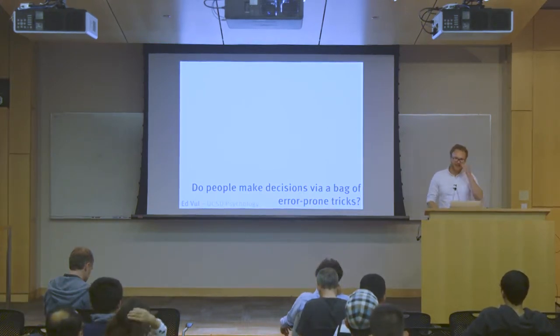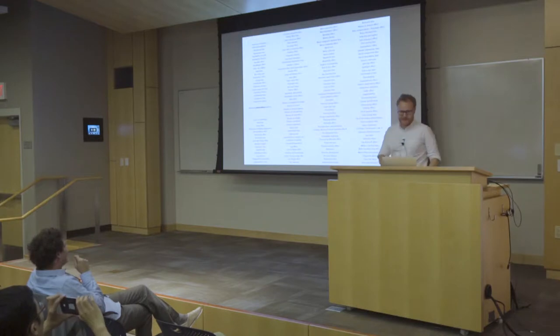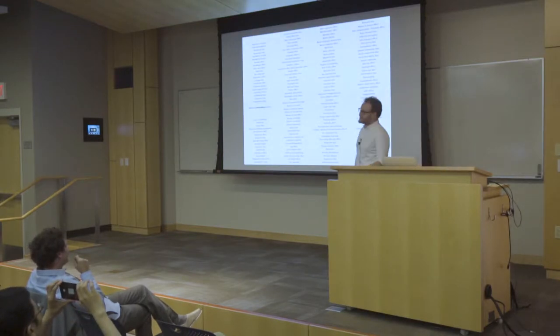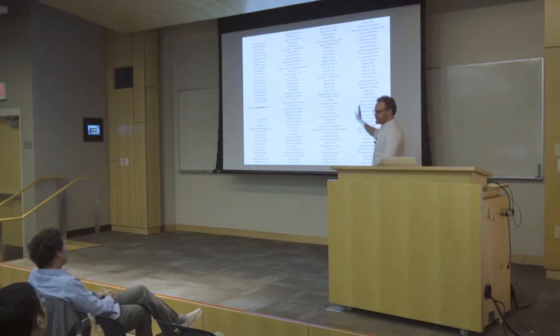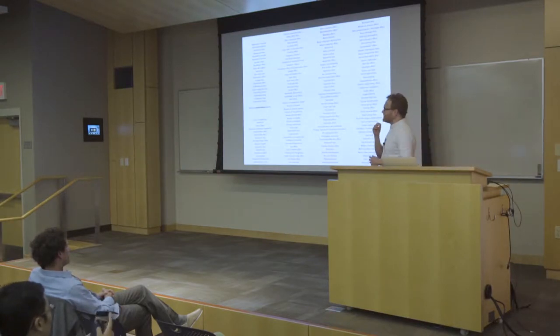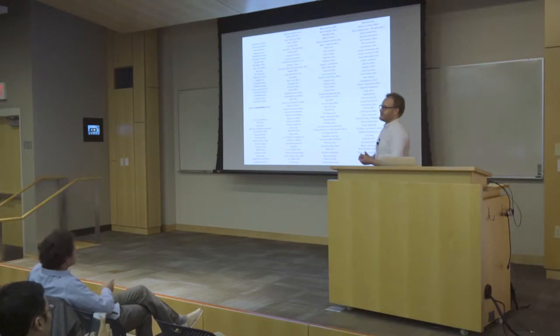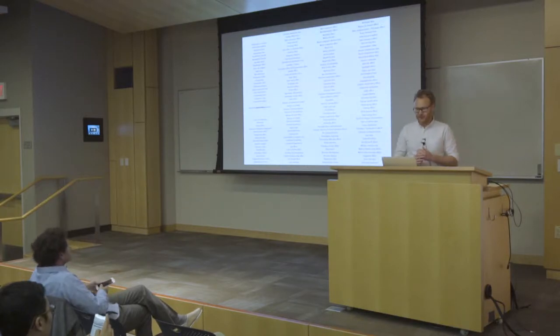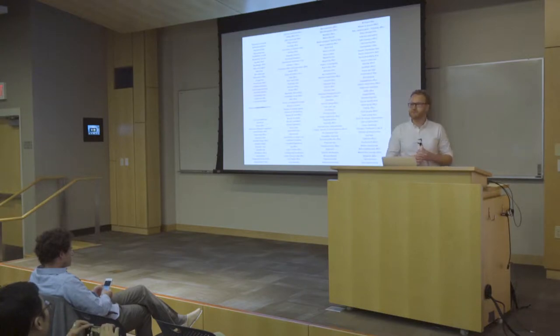So what I'm going to talk about is whether people make decisions via bag of error-prone tricks. And the bag of error-prone tricks I'm referring to is this slightly mangled list of heuristics and biases in cognitive psychology. Each of these items, there's well over a hundred of them, corresponds to a sensible bias in psychology. Each of these arose from experimenters cleverly comparing human behavior to some normative rational model and finding that human behavior deviates from the predictions of the normative model and thus a bias was born.